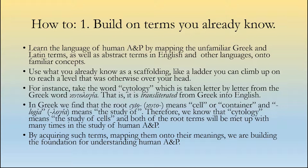For instance, take the word cytology — just to pick one out of the vast range of terminology in human anatomy and physiology. If you take it letter by letter from the Greek, kytologia, that process is called transliteration. We transliterate from Greek into English the word kytologia to get cytology. In Greek, the root cyto or kyto means cell or container, and logia means the study of. Therefore, cytology means the study of cells.